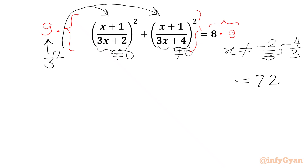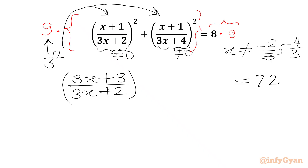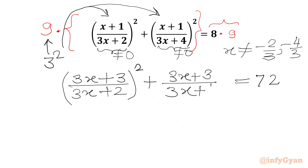The exponents are the same — power is 2. We can multiply 3 with (x plus 1), so we write 3x plus 3 in the numerator and the denominator 3x plus 2 as it is, whole squared. Plus 3 times (x plus 1) gives 3x plus 3, and the denominator will be unchanged: 3x plus 4, with power 2 as it is.